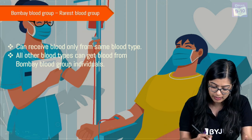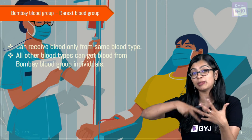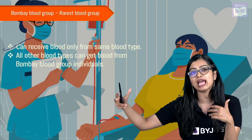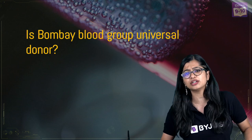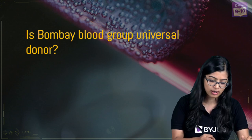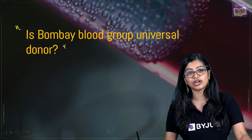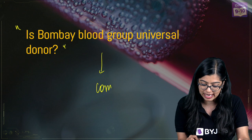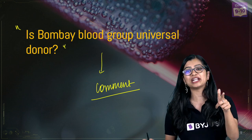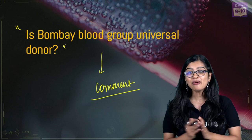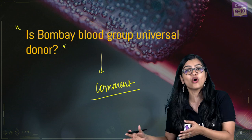People with Bombay blood group can receive blood only from the same blood type. For comparison, O is a universal donor that can donate to A, B, and O. So here's an interesting question for you — can we say that the Bombay blood group is a universal donor? Let me know in the comment section below. If you found this video interesting and learned something new about the Bombay blood group, do let me know in the comments as well. With this, we come to the end of today's class where we learned about what the Bombay blood group is and how it differs from the ABO blood group.